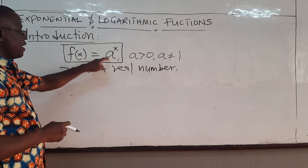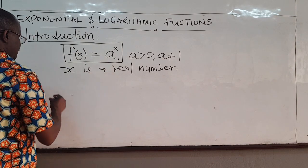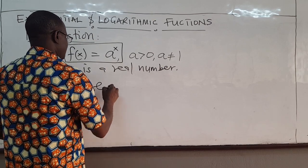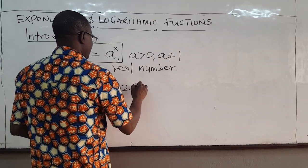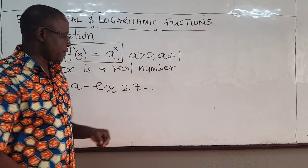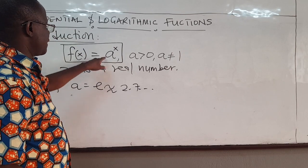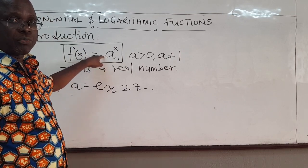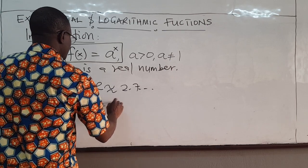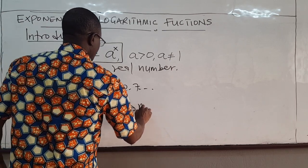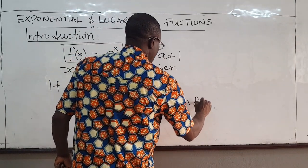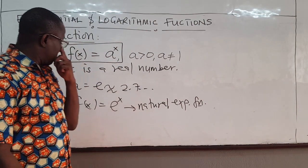If this a is equal to the number e — if a is the number e, which is approximately 2.7... and so on, it's a real number — then the function is called a natural exponential function.